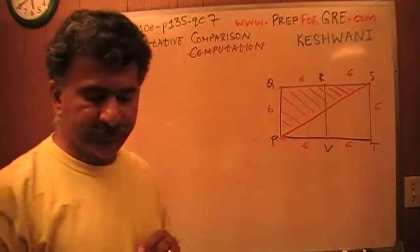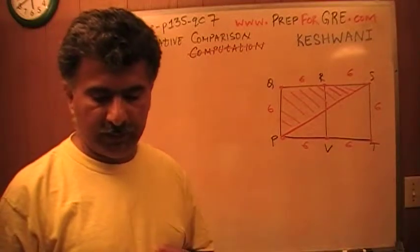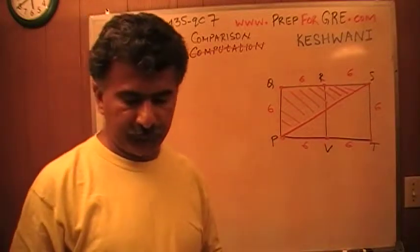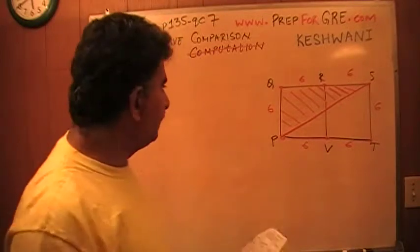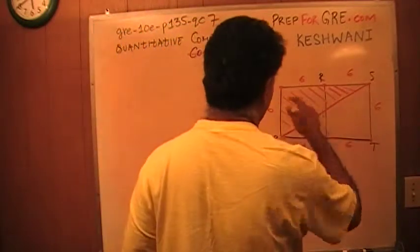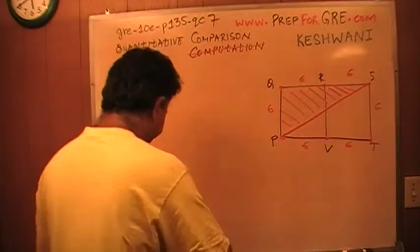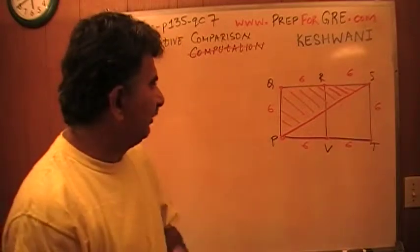Then we read one more time. It says the squares PQRV and VRST have sides of length six. The question is: area of the shaded region PQS, this triangle, how does it compare to 36? Let's take a look. Well, there are two ways of solving this problem.